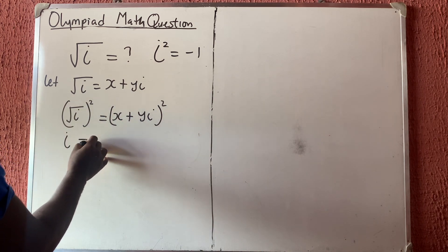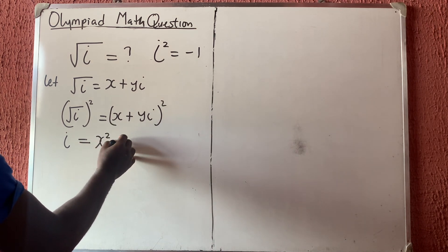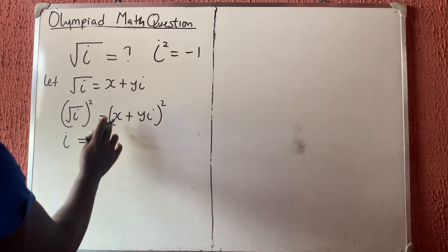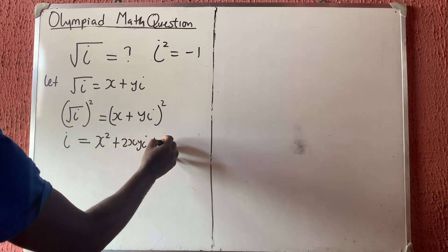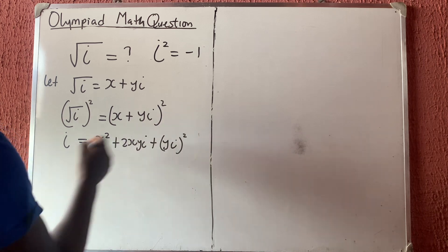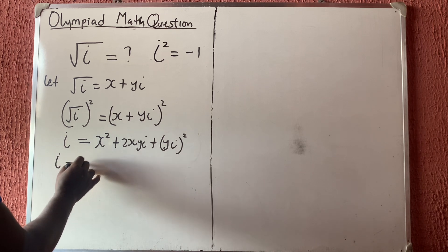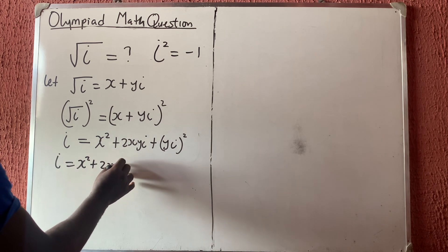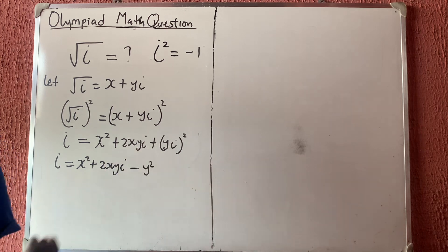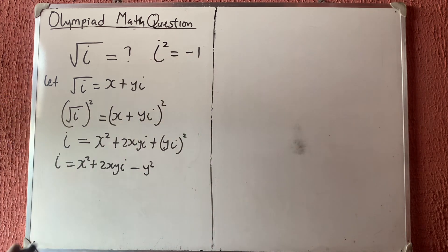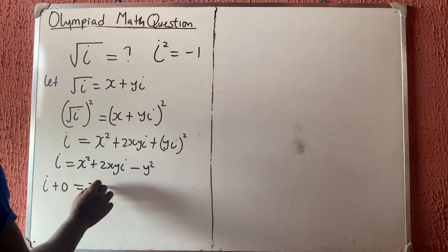We get: i equals x squared, then this times this doubled gives 2xy·i, and squaring the last term yi gives yi squared. So i equals x squared plus 2xyi, and since i squared is minus one, that gives minus y squared. So i equals x squared minus y squared plus 2xyi.